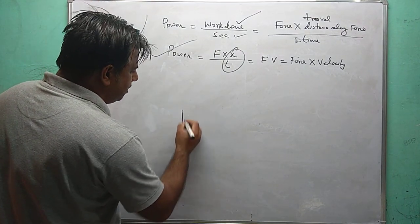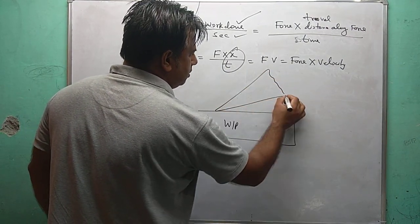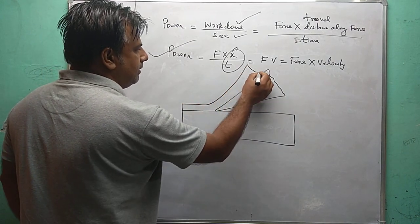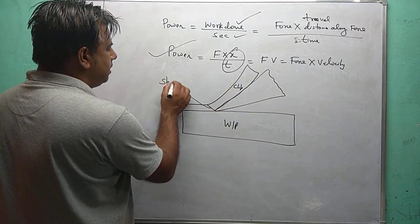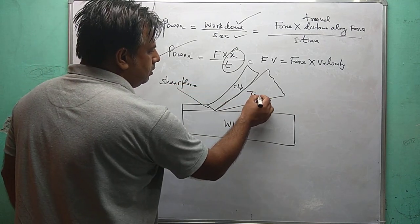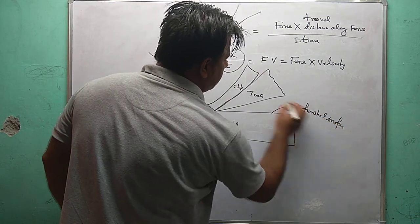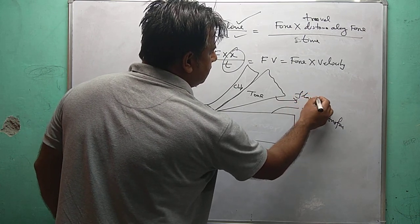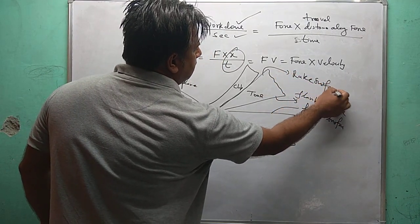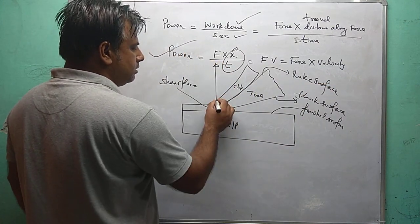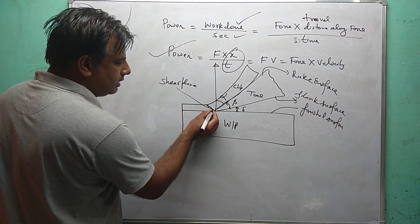Similarly, in orthogonal machining operations, this is the workpiece and this is the single point cutting tool with the thin zone deformation. After the shear plane it converts into the chip. This is the shear plane, this is your tool, this is the finished surface, this is the flank surface, the rake surface, and this is the normal. This angle is your rake angle alpha, this is the wedge angle beta, this is the clearance angle delta, and this is the shear angle phi.